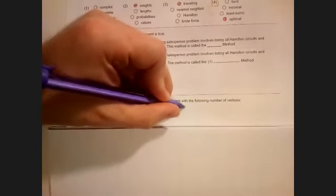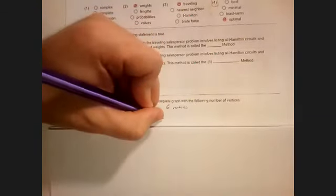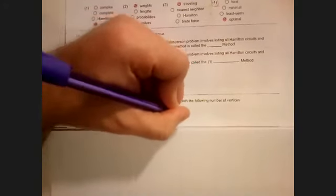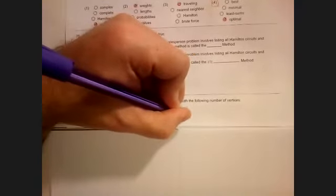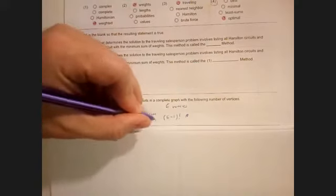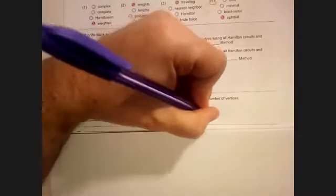Then 76: determine the number of Hamilton circuits in a complete graph with six vertices. So six vertices means six minus one factorial Hamilton circuits, which is five factorial, which is 5 times 4 times 3 times 2, which is 120.